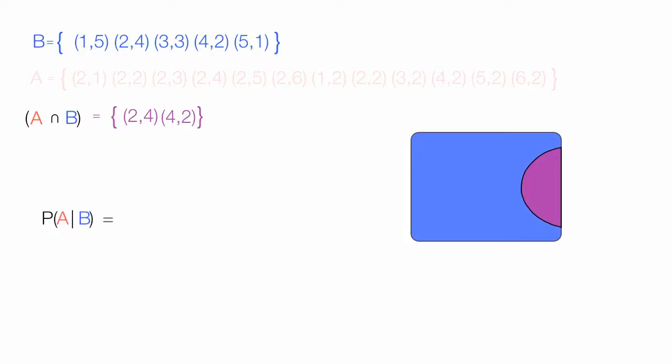The probability of A knowing B is equal to the probability of A intersection B divided by the probability of B. And this is equal to the number of the intersection, which is 2 in this case, divided by the number in the set B. In this case, there's five of those sets, five pairs of numbers.